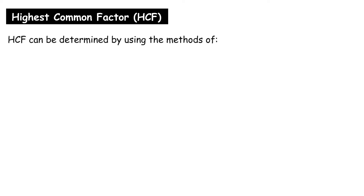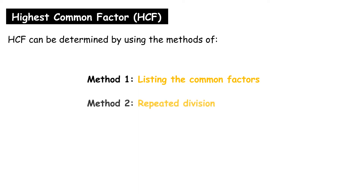Highest Common Factor (HCF). HCF can be determined by using three methods: Method 1 — Listing the common factors; Method 2 — Repeated division; Method 3 — Prime factorization.